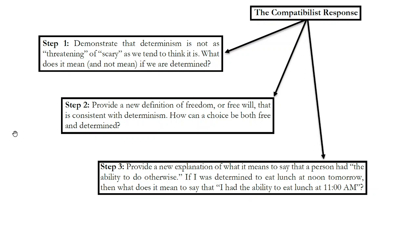The first thing the compatibilist wants to say is: there's no reason to be scared of determinism. Determinism gets a bad rap — it doesn't imply or mean everything that we sometimes think it does. Second, once they've tamped down our fear about determinism, compatibilists also want to give a new, or more precise, definition of freedom or free will — one that accounts for what we think about when we think about freedom, but also allows us to be completely determined.